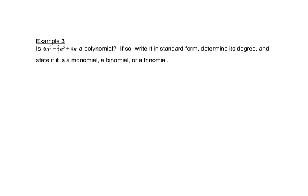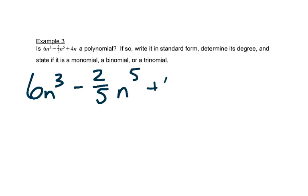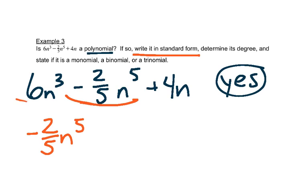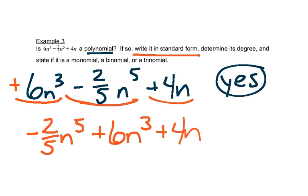This problem gives us 6n to the 3rd minus 2/5 n to the 5th plus 4n and asks if it's a polynomial. The answer is yes — no letters in the denominator or inside square roots. The next thing asks us to write it in standard form. Standard form wants the biggest exponent first, so the term with n to the 5th should be written first: negative 2/5 n to the 5th, then plus 6n to the 3rd, then plus 4n. That's standard form because the exponents on the variables get smaller.